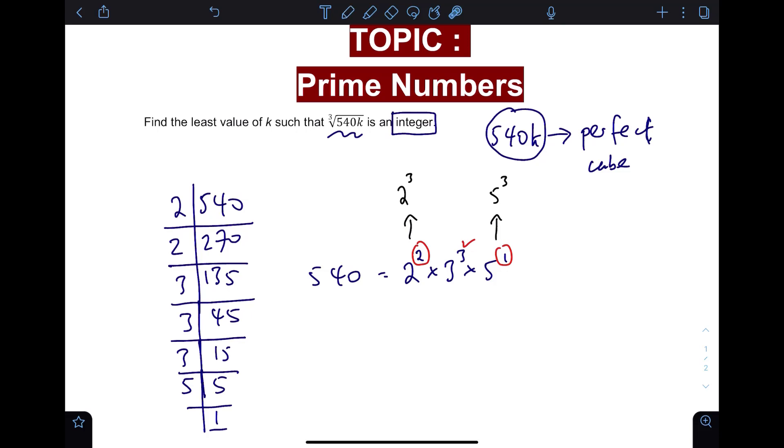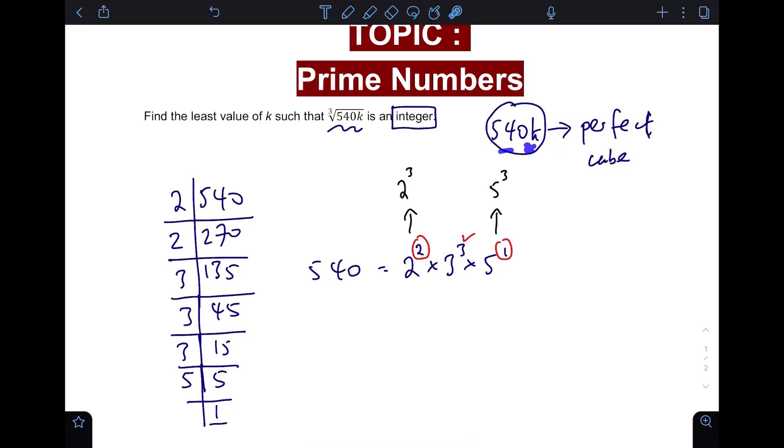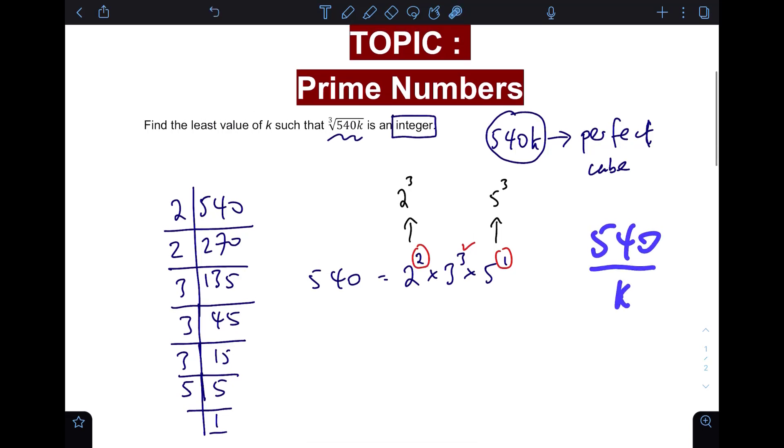Why do I push the powers up? Because I am doing a multiplication: 540 times k, and k is an integer. Which means that when you're multiplying, the powers must increase. It's different from when you're dividing—that's when your power must decrease.